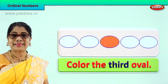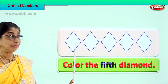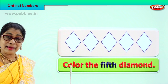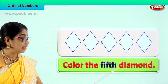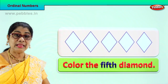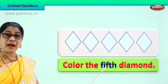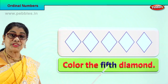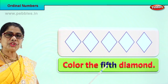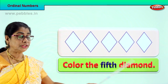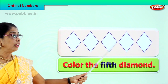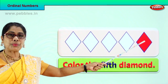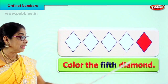Let's get on with a new exercise. We have diamond shapes: one, two, three, four — there are five diamond shapes here. Let's read together: color the fifth diamond. What shape is this? Diamond shape. Spell fifth: F-I-F-T-H. Fifth. Which diamond are you supposed to color? The fifth diamond shape. First, second, third, fourth, and the last one is the fifth. Color the fifth diamond. Spell fifth: F-I-F-T-H. Fifth.